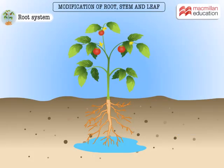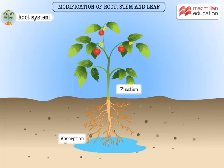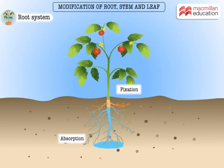Roots have two primary functions: fixation and absorption. Roots fix the plant to the ground and act as an anchor. Roots absorb nutrients and water necessary for plant growth from the soil. Sometimes, to adapt to their surroundings, roots are modified to perform additional functions.